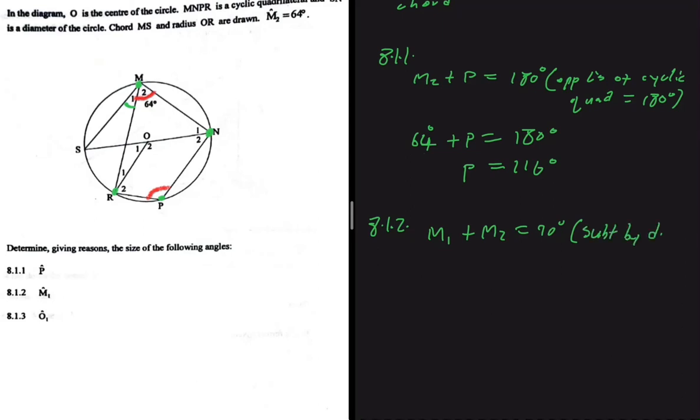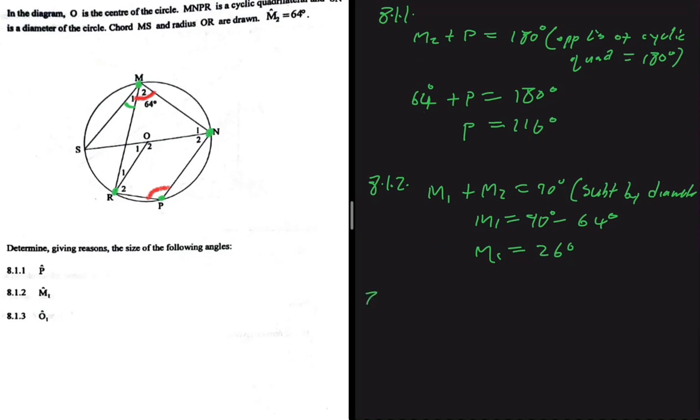So now we can see that M1 should be equals to 90 degrees minus 64 degrees - that is M2. So M1 should be equals to 26 degrees. And the last one, 8.1.3, we're looking for the size of O1.